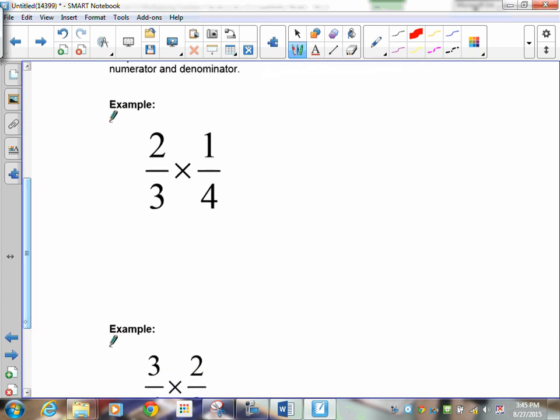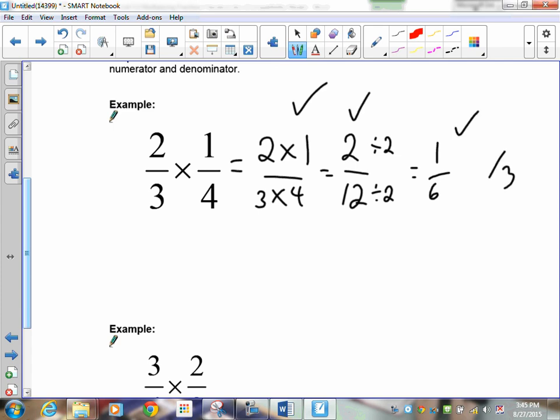I want you to multiply this. You can choose to do the reducing before you multiply, or you can do it at the end. It's your choice. So now that you've paused it, the easiest way is this. Top times top, bottom times bottom, 2 times 1 is 2, 3 times 4 is 12, and now you have to reduce it. 2 goes into both. So your answer is 1 sixth.